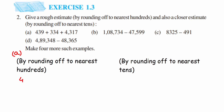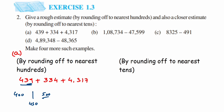The first question is 439 + 334 + 4317. We have to round off to nearest hundred, so we check the hundreds place. For 439, it lies between 400 and 500. The center point is 450, and since 439 is less than 450, it is closer to 400. So 439 rounds off to 400.